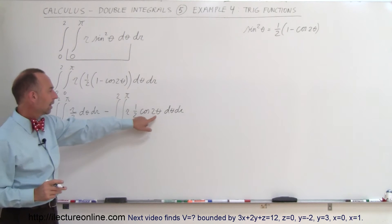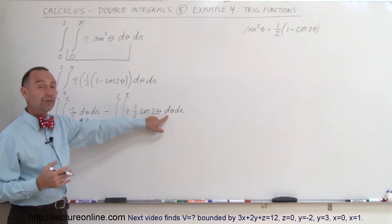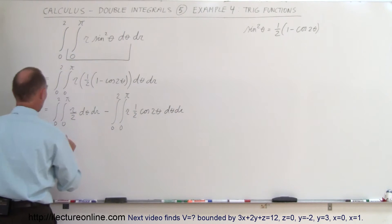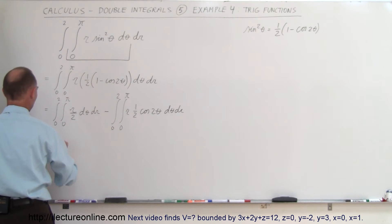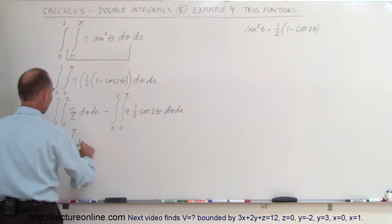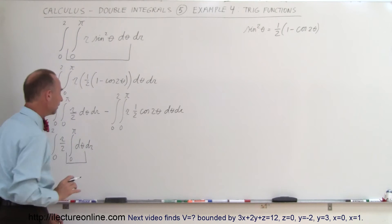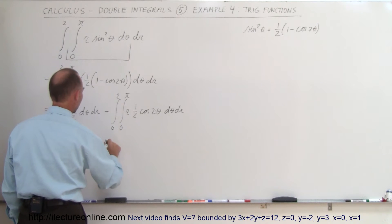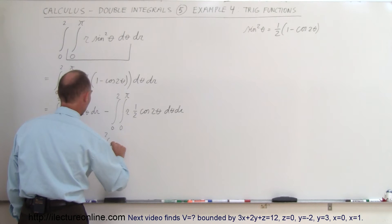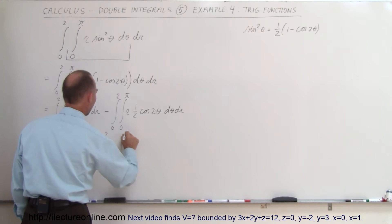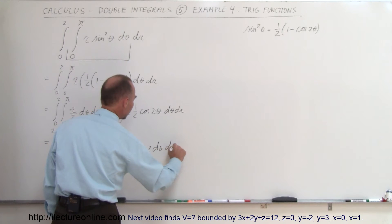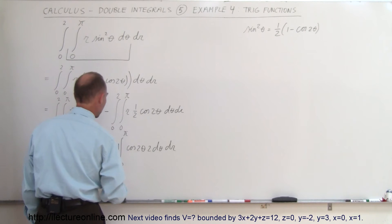Looking at the cosine of 2 theta term — to integrate that I need the proper differential, a 2 d theta, and I have a one half, which means I have to multiply by 2 and divide by 2 to compensate. So we take r over 2 outside the integral sign for the first part, and for the second part, from 0 to 2, r divided by 2 times the integral from 0 to pi of cosine of 2 theta times 2 d theta, dr, and since I multiply by 2 I also divide by 2 over here to compensate.